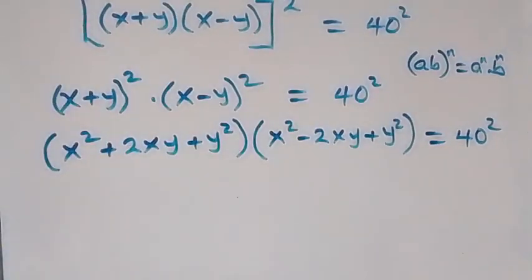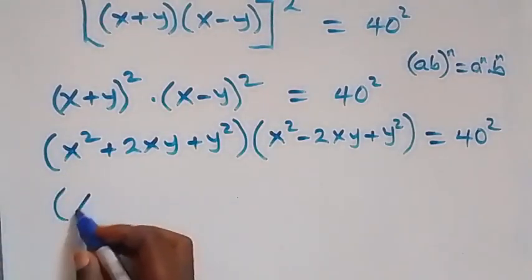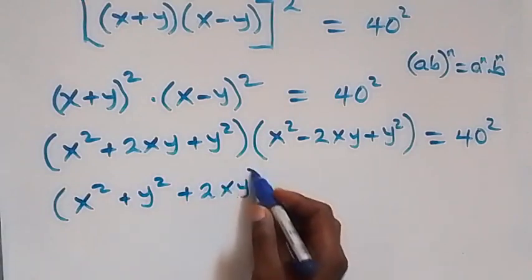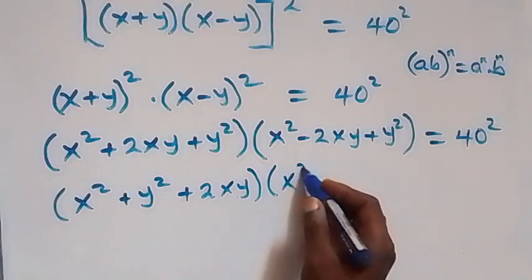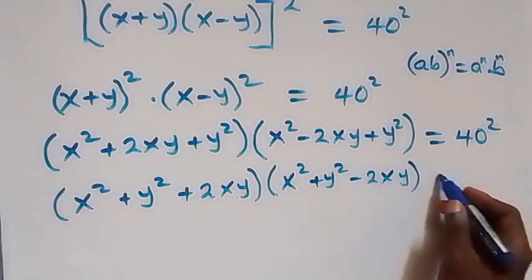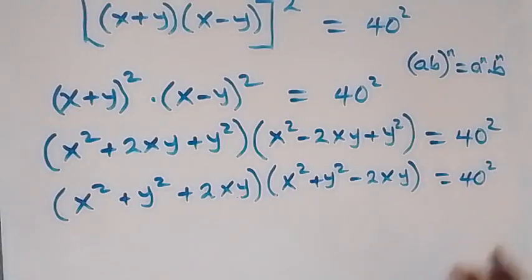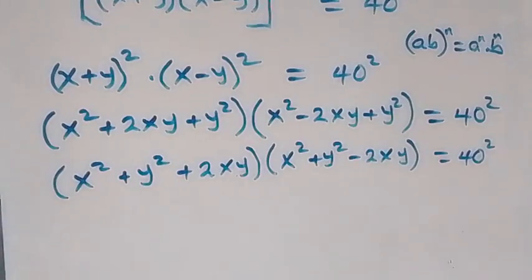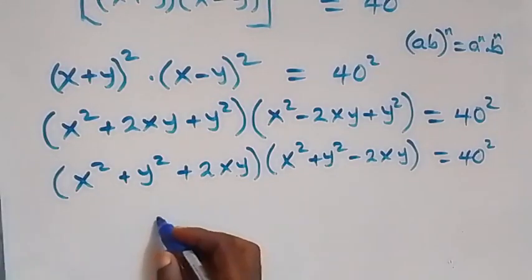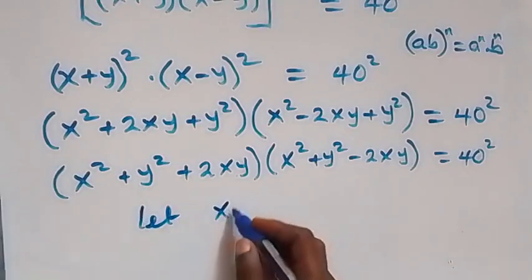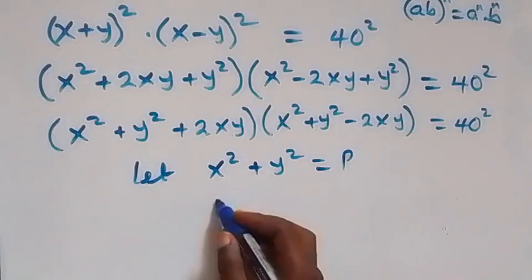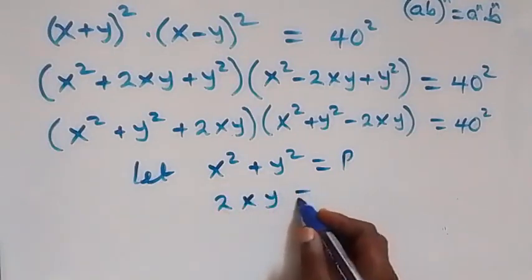We can rearrange this as (x squared plus y squared plus 2xy) times (x squared plus y squared minus 2xy) equals 40 squared. Now let x squared plus y squared equal p, and let 2xy equal q.